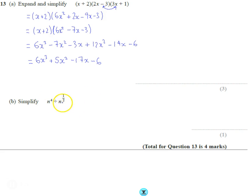Here, we've got some indices here, and we need to remember the indices law of n to the power of a divided by n to the power of b, which gives us n to the power of a minus b. So we're subtracting the powers.